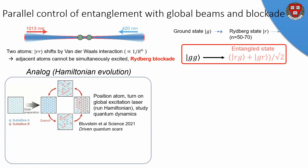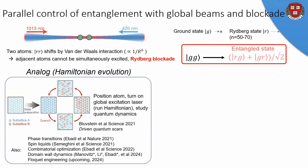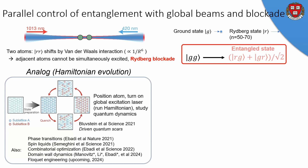We've used this in our lab for studying various analog quantum simulations where we study some type of Hamiltonian evolution, which works in quite a simple way. We arrange our atoms in some configuration like a square lattice or a Mario lattice, turn on our global excitation laser, and the system just runs the Hamiltonian evolution under these blockade dynamics. Using this approach, we've been able to study things like chaotic or non-chaotic quantum systems, phase transitions, spin liquids, and combinatorial optimization — all using just atom positioning and global laser pulses.